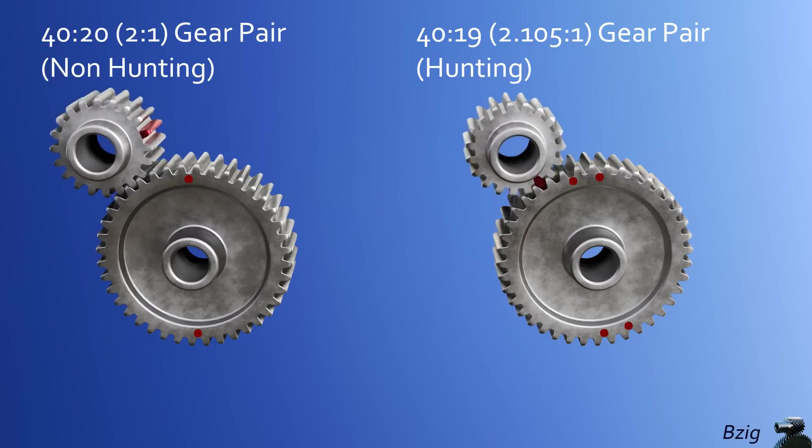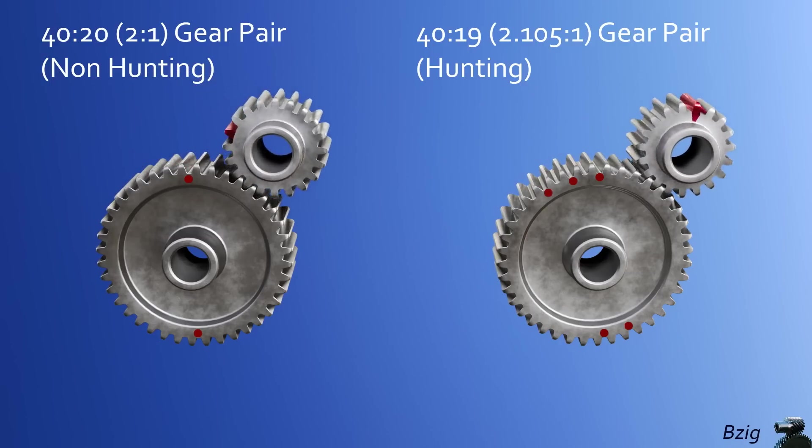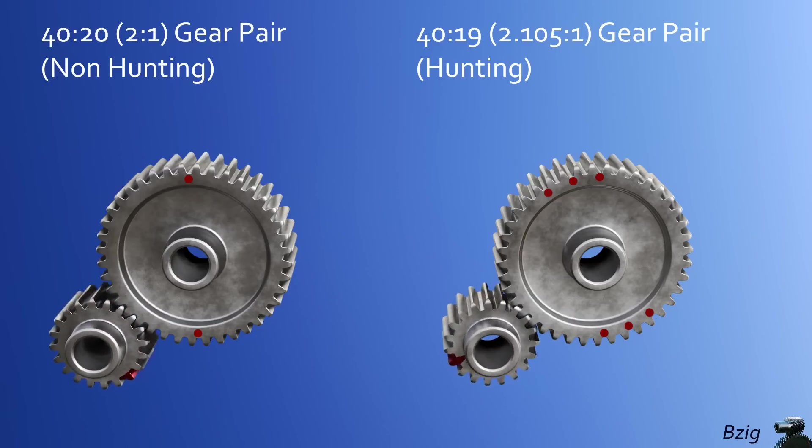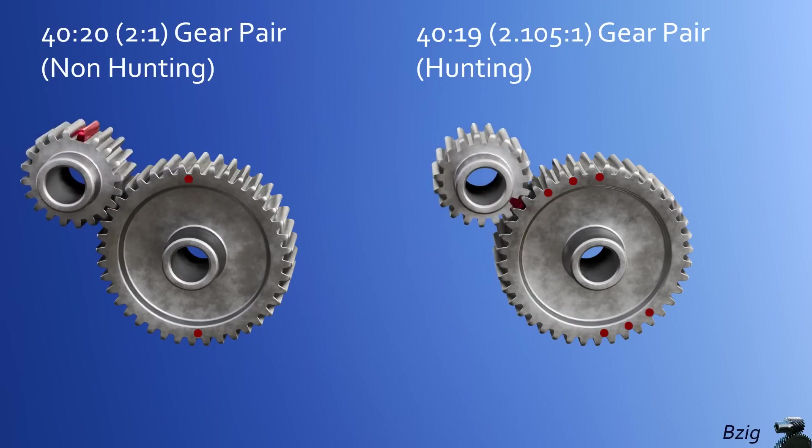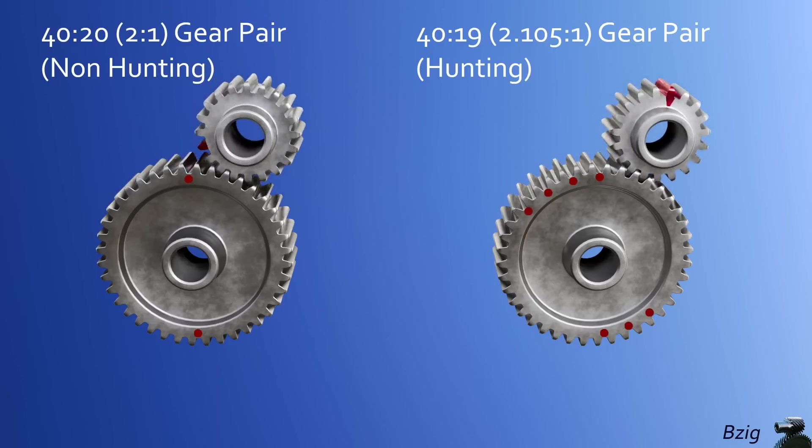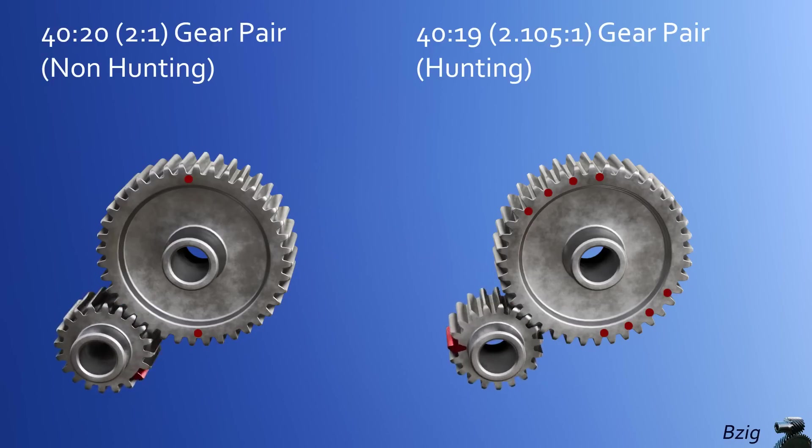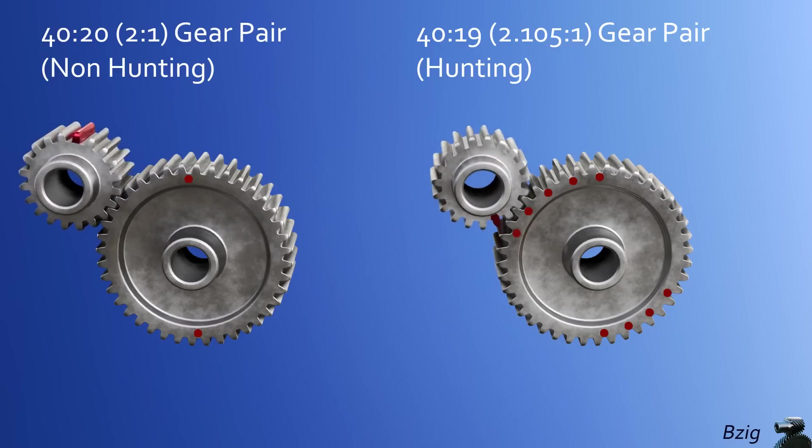Instead, it's meshing after 19, 38, 57, and all of the other multiples of 19 until it contacts every tooth on the 40-tooth gear, and then it repeats the cycle. This is the visual definition of a hunting tooth gear. The gears on the right are hunting, and the gears on the left are non-hunting.